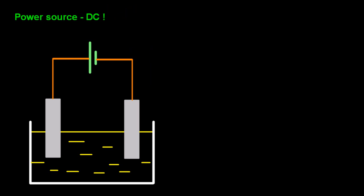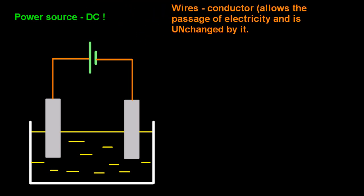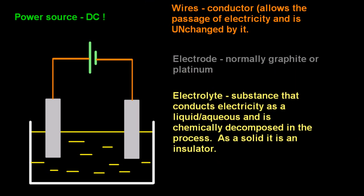AC is alternating current. The wires are conductors, they allow the passage of electricity and are unchanged by it. The electrodes that you stick into what you're going to electrolyze are normally graphite or platinum, those are very resilient to the high temperatures and corrosive environments of electrolysis. The electrolyte is the substance that conducts electricity as a liquid or aqueous and is chemically decomposed in the process. As a solid it's an insulator.